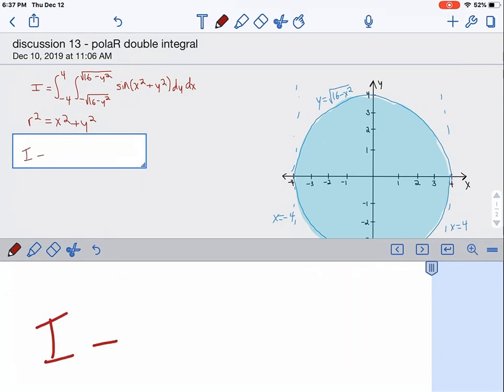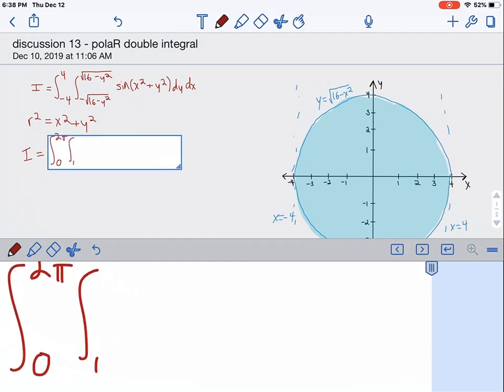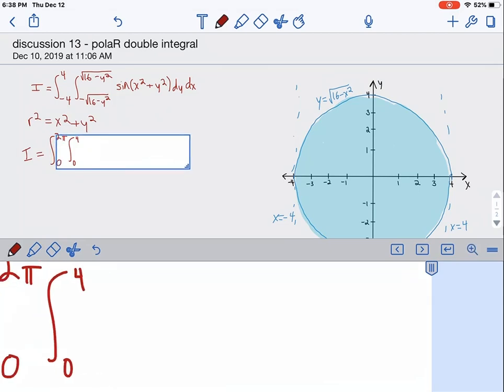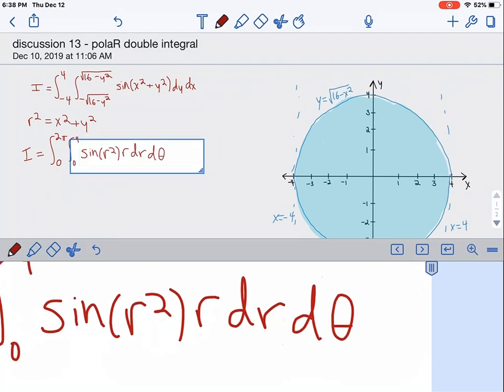So given that, we can write the integral from 0 to 2 pi of the integral from 0 to 4 of sine of r squared times r dr d theta. So this is the integral.